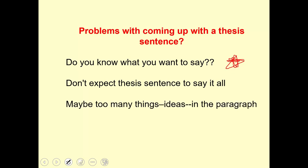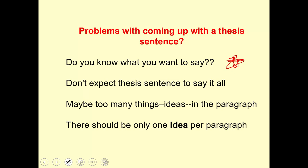Another problem is that you may just be trying to fit too many ideas into the paragraph, in which case you're not going to be able to come up with a good thesis or topic sentence because you're just trying to do too much. The solution is to write more than one paragraph — divide up the ideas into separate paragraphs. So again, there should be really only one idea per paragraph. And if you have problems coming up with that thesis or topic sentence, you may simply have too many ideas that you're trying to get across.